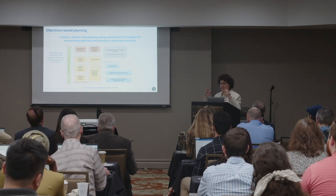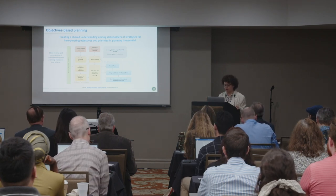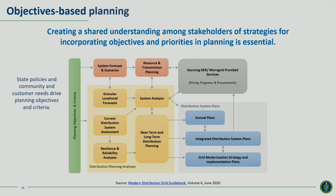The second element is developing system-wide forecasts and scenarios, to ensure consistency with bulk power system planning — which could include iteration with ISOs and RTOs. For example, folks from Illinois work with their RTO to make sure there's sensibility between the utility's forecasts for DERs and loads and what the ISO and RTO are doing. Utilities should consider multiple scenarios for loads and distributed resources on the distribution system, because they have impacts on the need for and timing of bulk power system investments, such as investments in transmission.